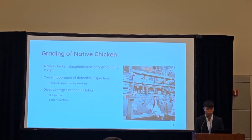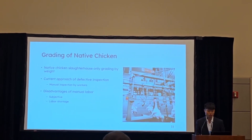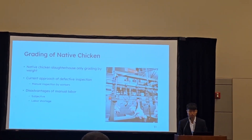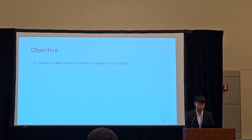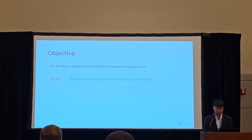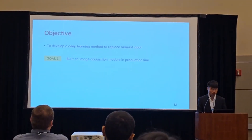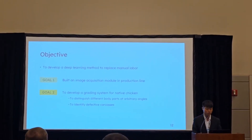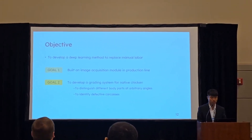The current approach to pick out the defect carcasses is through manual work, but manual work is subjective. Additionally, the industry is shorthanded, so it is hard to hire new workers. Therefore, the objective of this research is to develop a deep learning method to replace manual labor. This system has two goals: first, to build an image acquisition module at the production line; second, to develop a grading system for native chicken that can distinguish different body parts at an arbitrary angle and identify defect carcasses.